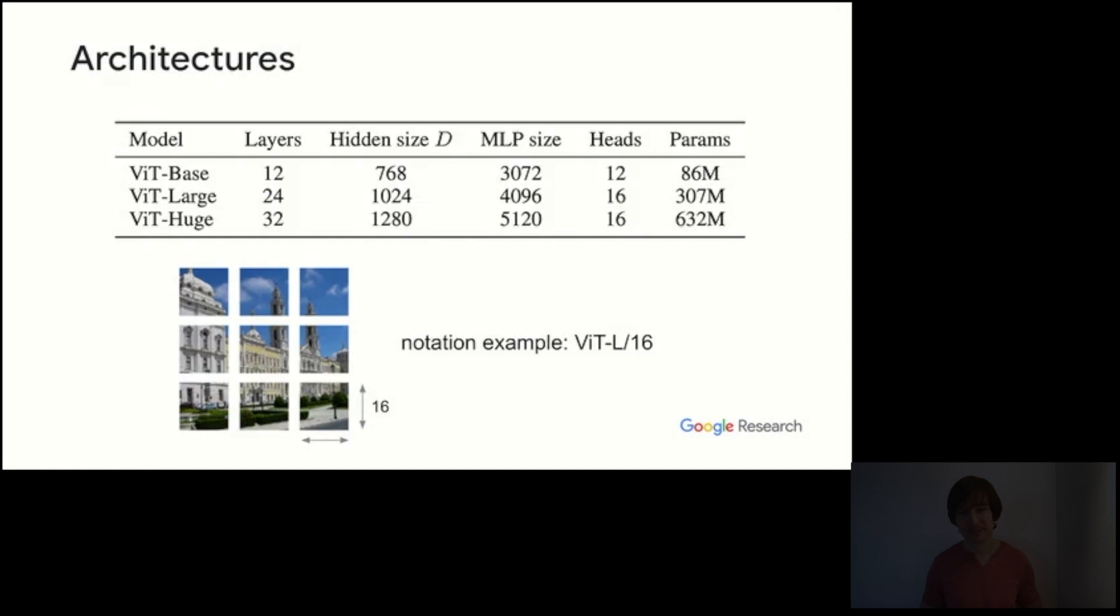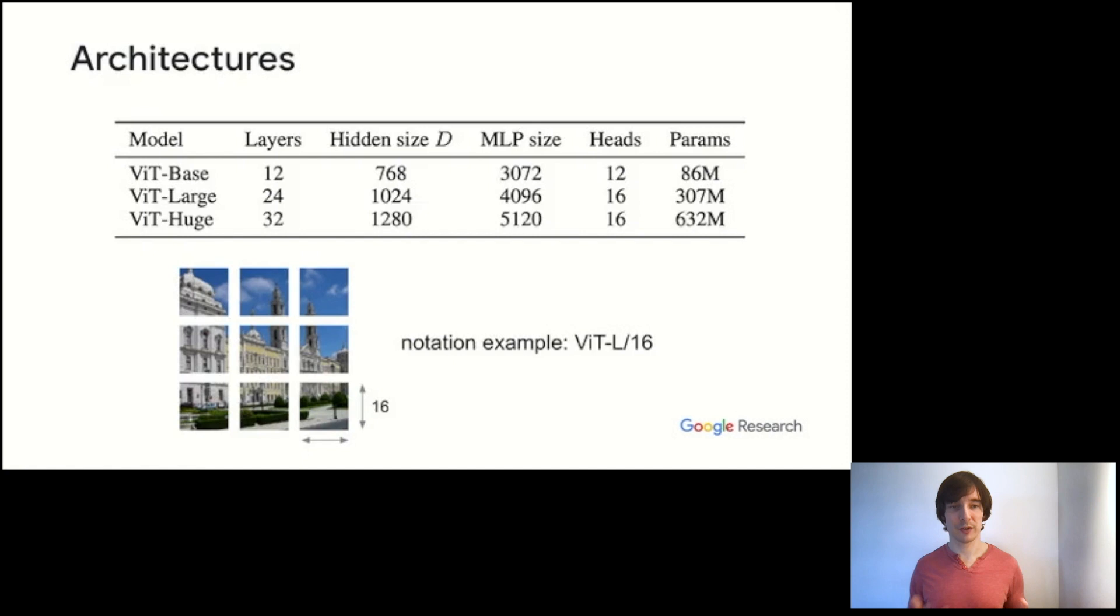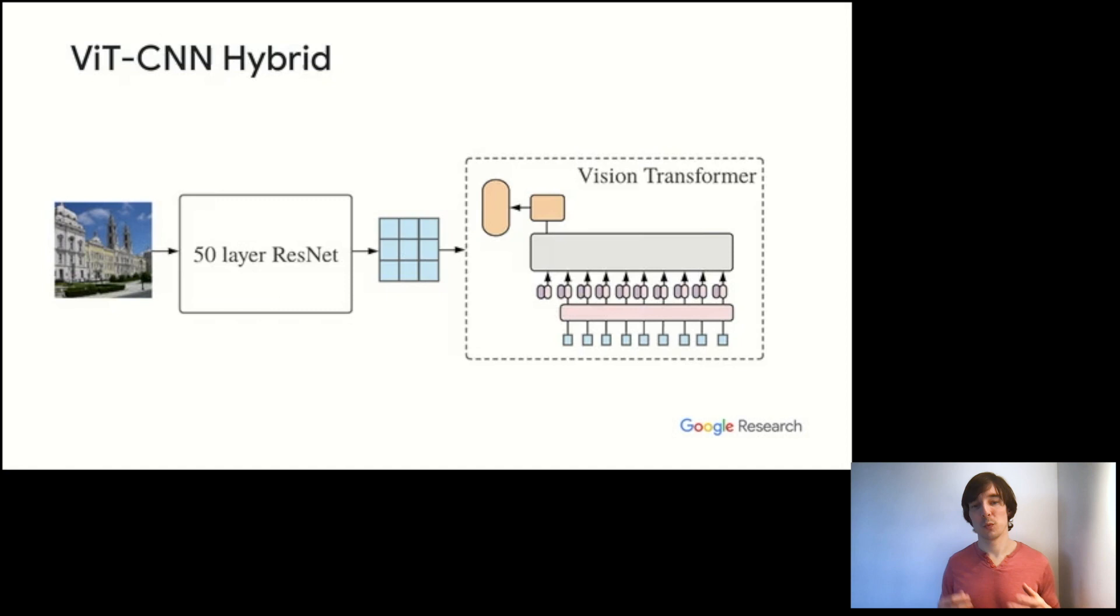These are the models that we experiment with in the paper. So we have the vision transformer base and large, and these follow the BERT base and large architectures. They have the same number of layers and same hidden dimensions. We also experiment with a larger version, ViT-Huge. The notation is as follows. So ViT-L/16 means a vision transformer large version with 16 by 16 pixel patches. So a smaller final number would mean smaller patches and hence a longer sequence and actually a larger architecture.